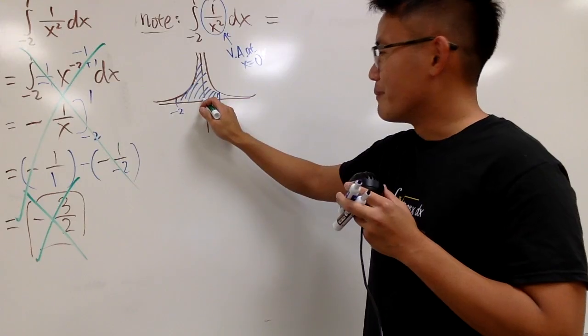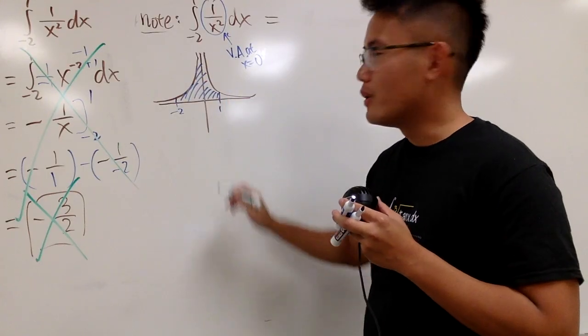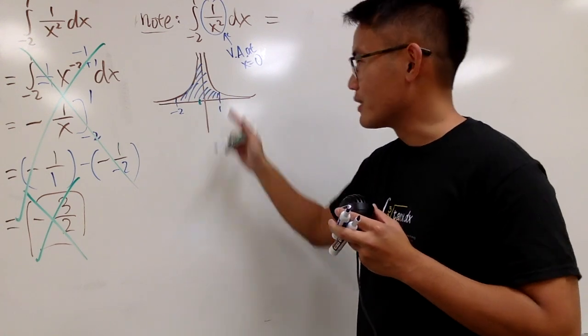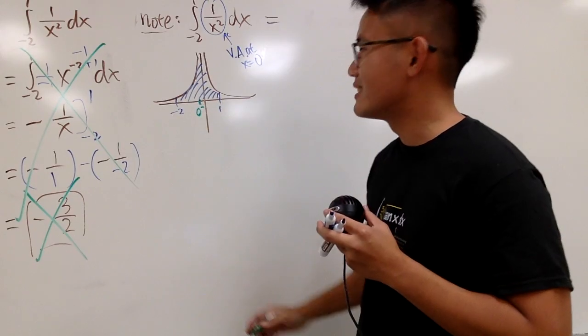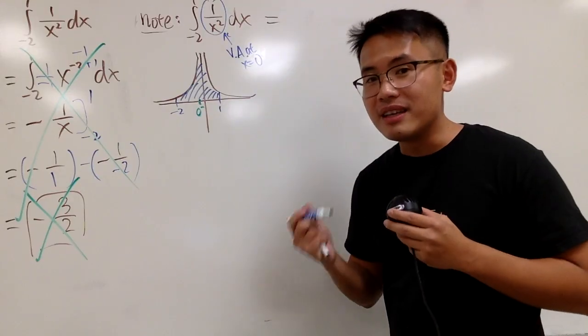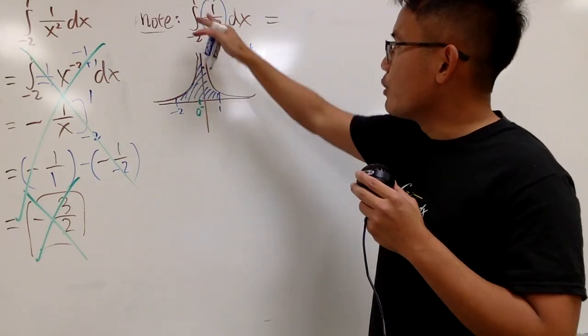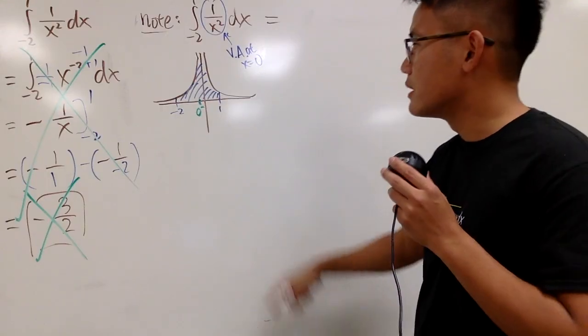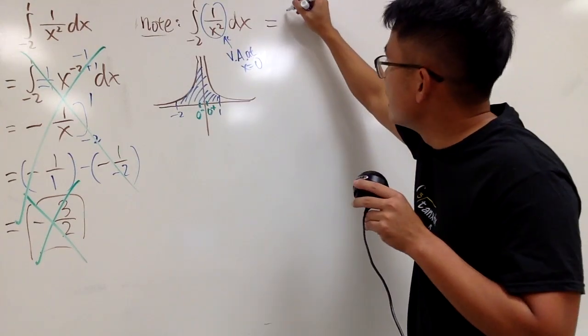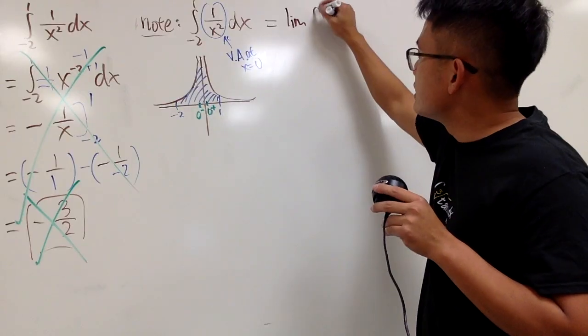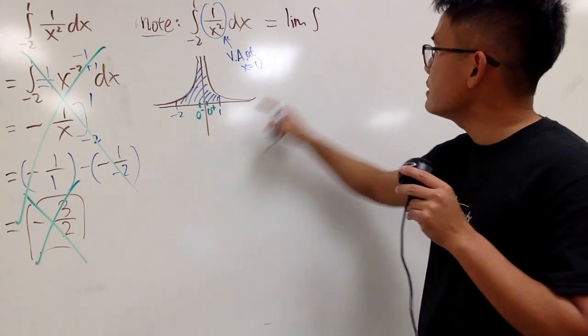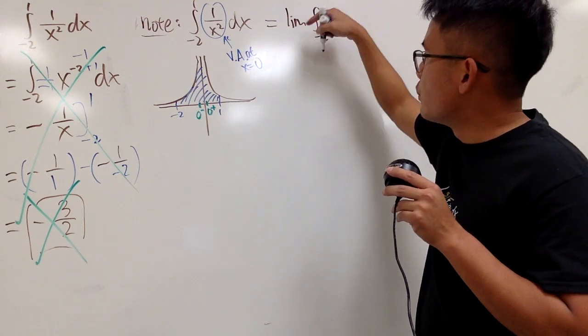instead of going to hit exactly 0, we can just kind of pretend we're almost over there from the left-hand side. So, this right here is what we call the 0 minus. We approach 0 from the left-hand side. So, this is the idea of taking the limit. And you are going to break this integral into two integrals. The first one, it goes from negative 2 to 0 minus. And the proper way to write this is that we have to take the limit. And let me write down the integral first. And you see, for this part right here, we go from negative 2 to 0 minus. So, we start at negative 2. And we want to end up with 0 minus.